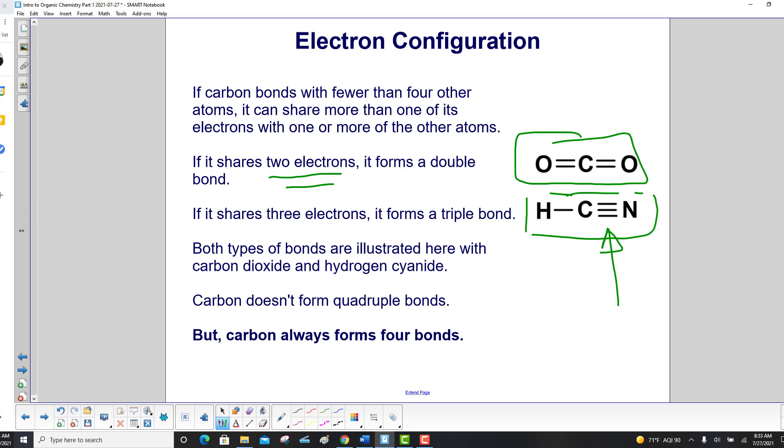Both types of bonds are illustrated here with carbon dioxide and hydrogen cyanide. Carbon does not form quadruple bonds, but carbon always forms four bonds. So here, it has two double bonds, so that's four bonds. Here it has a single bond and a triple bond. Three plus one, four.